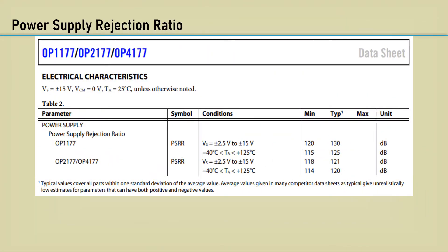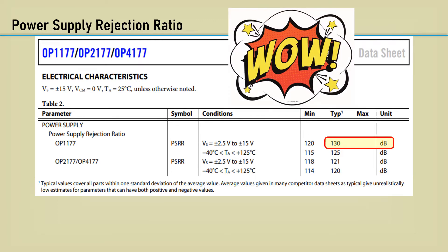Let's begin by looking at the power supply rejection ratio spec again. This is a typical spec with a whopping 130 dB typical rejection — that's definitely a wow factor. Converting from dB comes out to only 320 nV per volt. One thing they don't often advertise in the PSRR specs, unless otherwise specified, is that it's relative to the input. It's actually the amount of input offset voltage change with power input change.